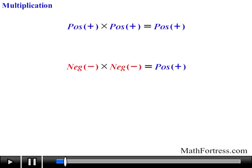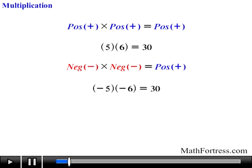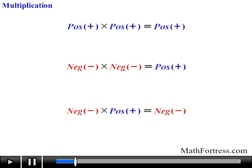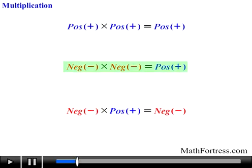Recall that if two numbers have the same sign their product is positive. For example, 5 times 6 is equal to 30, and negative 5 times negative 6 also equals 30. If two numbers have opposite signs their product is negative. For example, negative 5 times 6 equals negative 30 and 5 times negative 6 also equals negative 30. In a nutshell: a positive times a positive equals a positive, a negative times a negative equals a positive, and a positive times a negative equals a negative. That's all there is to know about multiplication.